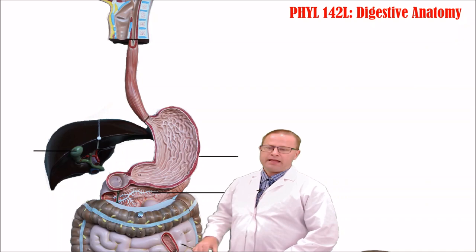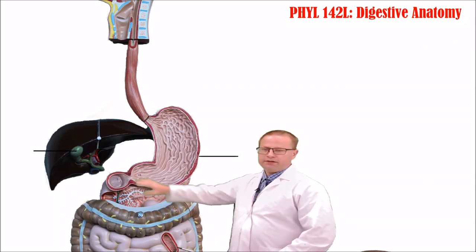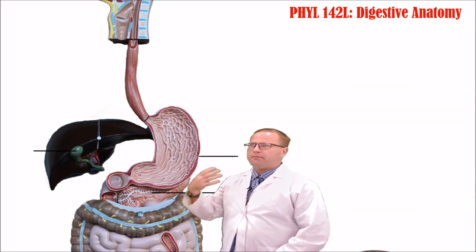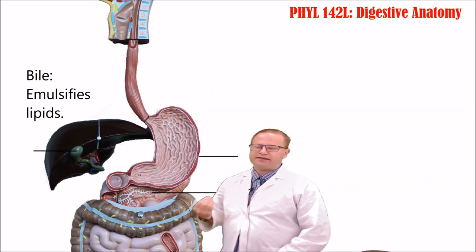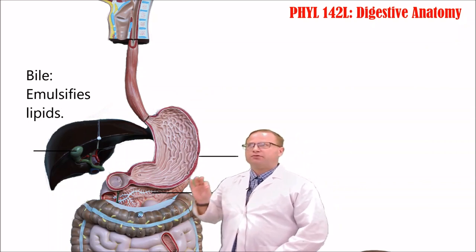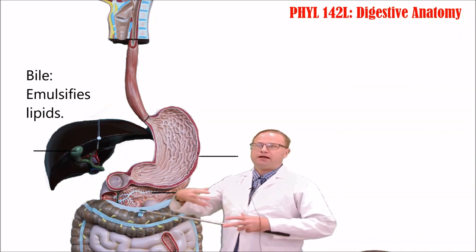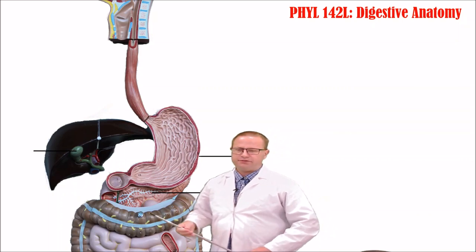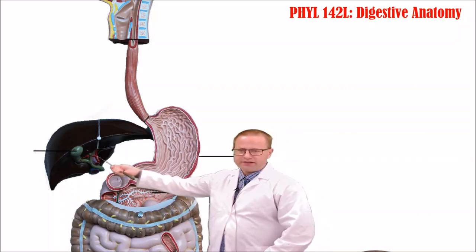As for other secretions from other organs at this point: the liver manufactures bile, which is useful in emulsifying fats. Bile doesn't actually break down triglycerides into monoglycerides, but it does help emulsify them into smaller droplets. Bile is produced in the liver but stored and concentrated in the gallbladder.